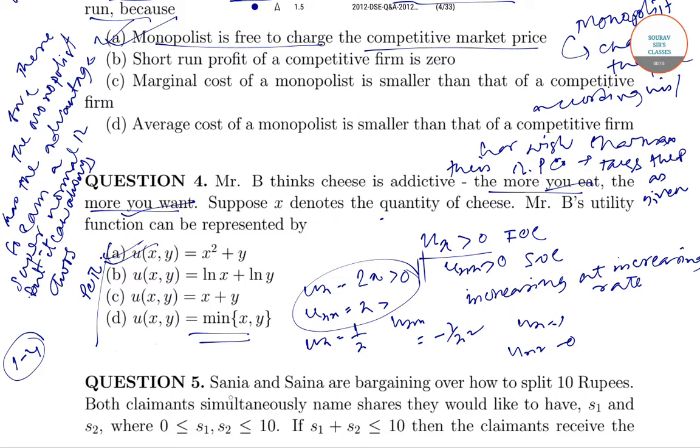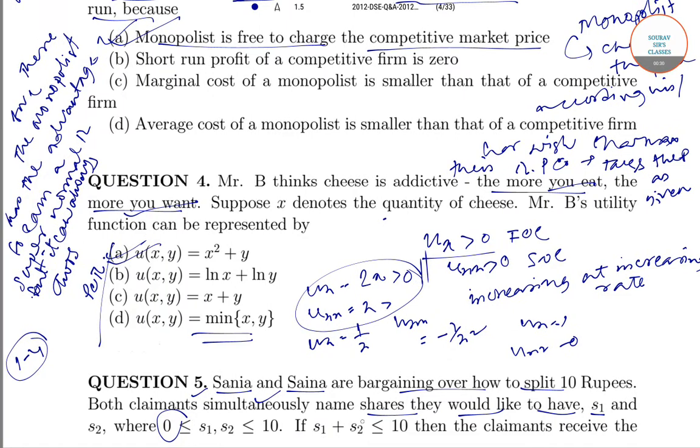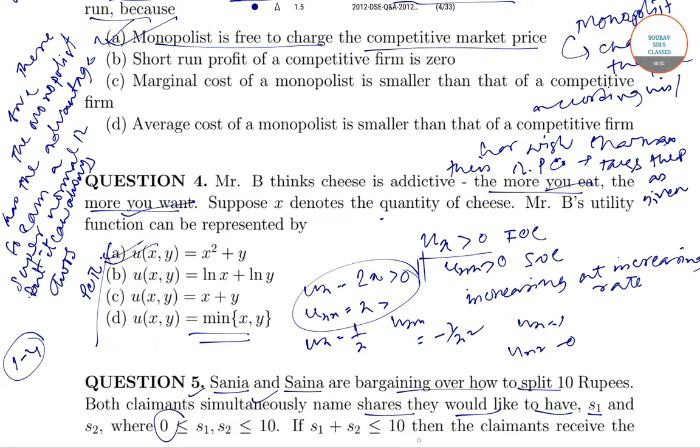So question number 5 says, Sanya and Saina are bargaining over how to split 10 rupees. So it is a classic dollar splitting game. Both claimants simultaneously name the shares they would like to have, which is S1 and S2, lying between 0 to 10. And S1 plus S2 is always adding up to less than or equal to 10.